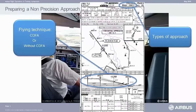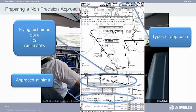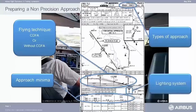The second thing: how will I fly the approach? Will I use the CDFA, or Constant Descent Flight Path Angle, or will I do it without? What about the minimas? Which minima can I use and do I have to use?